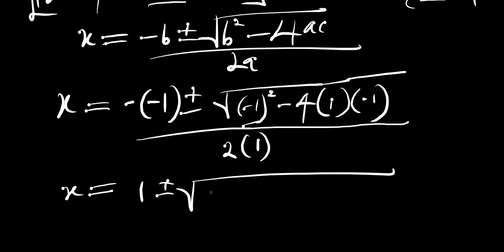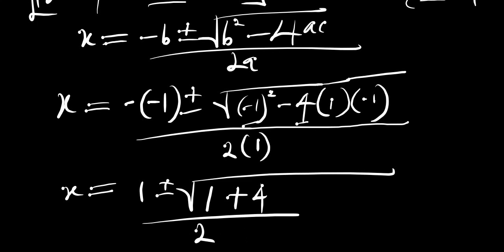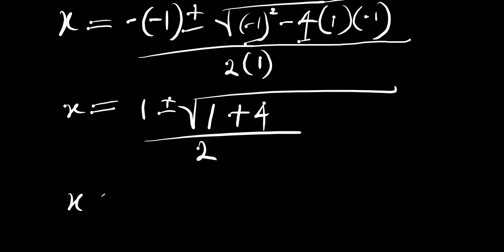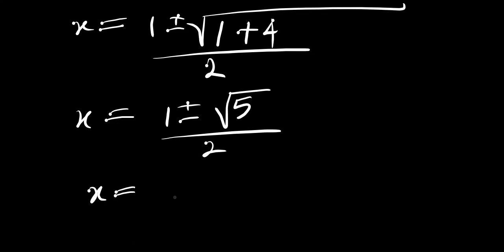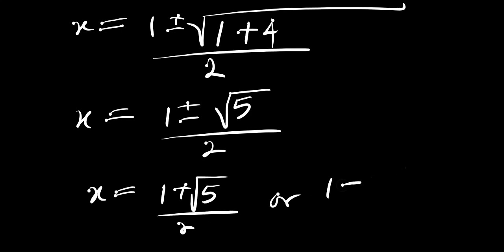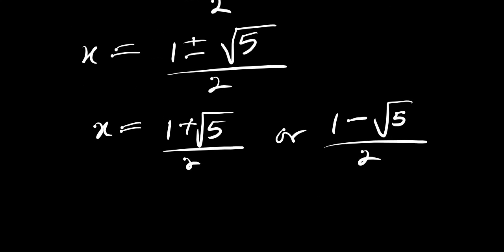Negative 1 squared gives positive 1, and minus 4 times 1 times negative 1 gives plus 4, divided by 2. So we have x equals 1 plus or minus — since 1 plus 4 is 5 — the square root of 5, divided by 2. Therefore x equals 1 plus root 5 divided by 2, or 1 minus root 5 divided by 2.